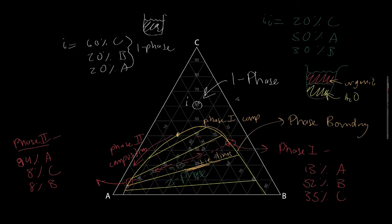One final comment on the triangle diagram is if we look at the line connecting A and C, we find that it is contained entirely within the one phase region, which indicates that A and C are miscible. Likewise, in between B and C are miscible.